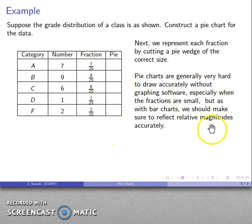And so, with bar charts, as with pie charts, we should try to make sure our magnitudes, our relative magnitudes, are reflected accurately in the size of the piece.